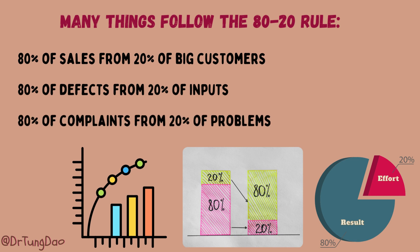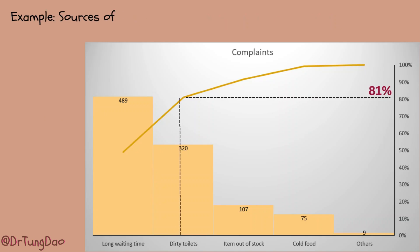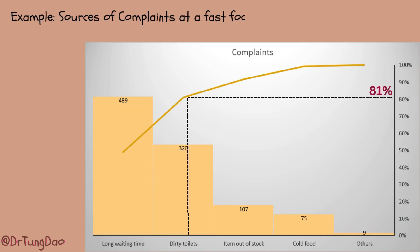We now use a fast-food restaurant as an example, which received approximately 1,000 customer complaints related to its service. These complaints are categorized and shown in columns based on their respective types. Applying the 80-20 rule reveals that a significant 81% of the complaints stem from two primary issues.